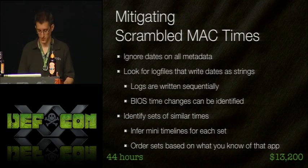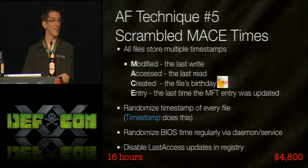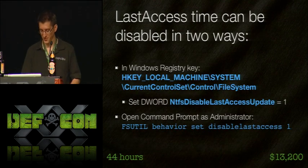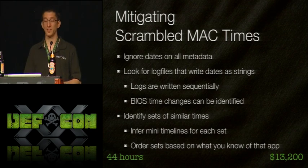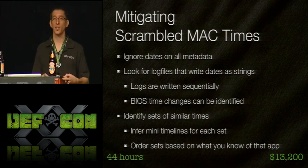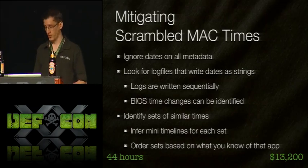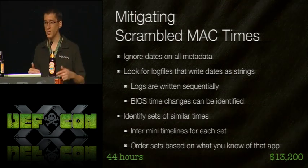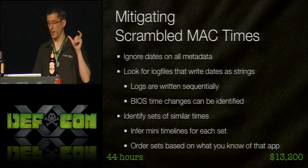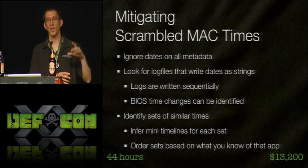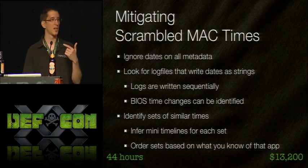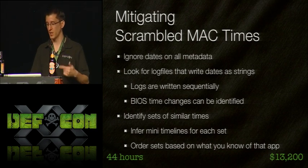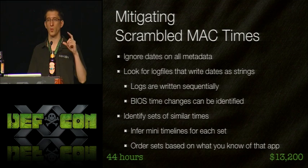This scrambling will take 16 hours of the investigator's time and cost $4,800. To mitigate against timestamp tampering, first ignore all the timestamps you see — you know they're scrambled. Instead, look for log files where time values are stored as text strings. These log files are written sequentially — every time an event occurs, a log entry is created with the system's current date. This allows you to see a rough set of times and determine ordering. If the attacker has a daemon constantly changing the BIOS time, a sequential log will show which time values came before which.